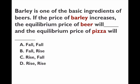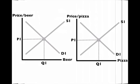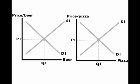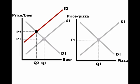The answer is rise and fall. Here's the market for beer: the price of the input goes up, the supply shifts left, and that increases the price of beer. If the price of beer is more expensive, people are going to want to buy less pizza because they only like pizza with beer. The demand for pizza goes down, and that reduces both the price and the quantity of pizza.